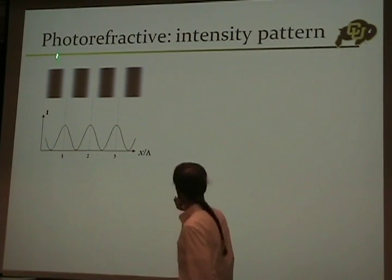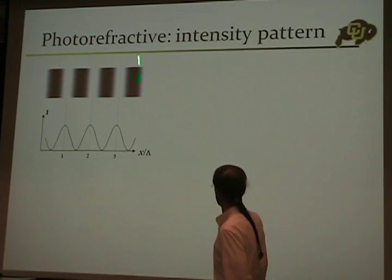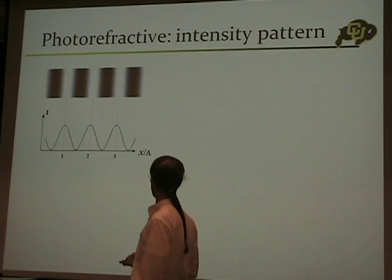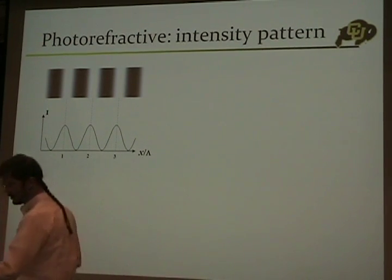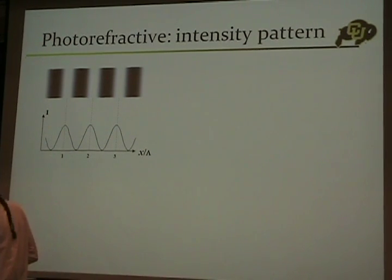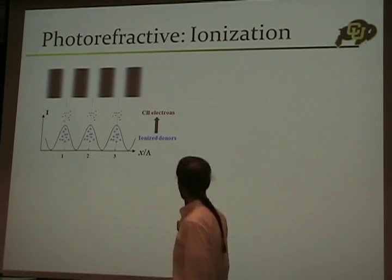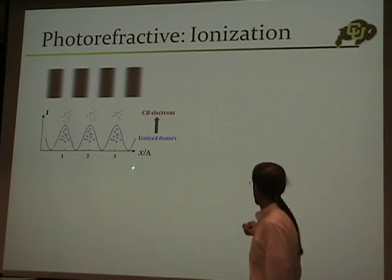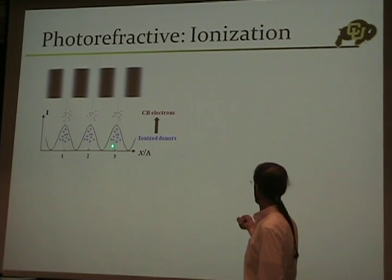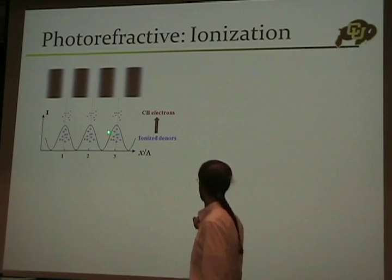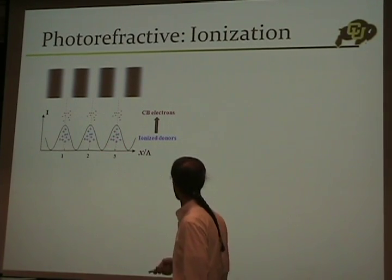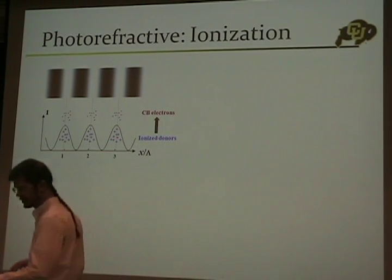We've got an interference pattern that has some sinusoidal intensity fringes, shown here. We put that on a photorefractive crystal — I'll just do one dimension so I can actually do drawings. That's going to ionize some donors, so I'll have some positive charges in the bright regions, and I'll excite some conduction band electrons.